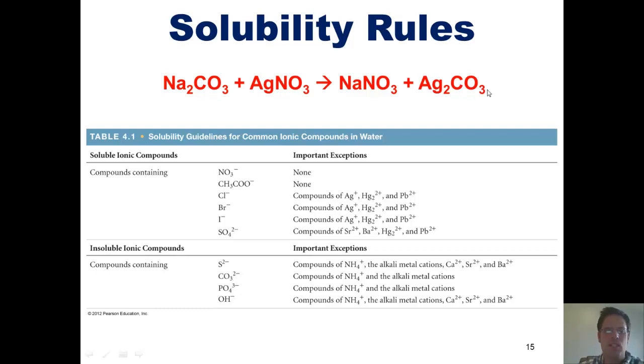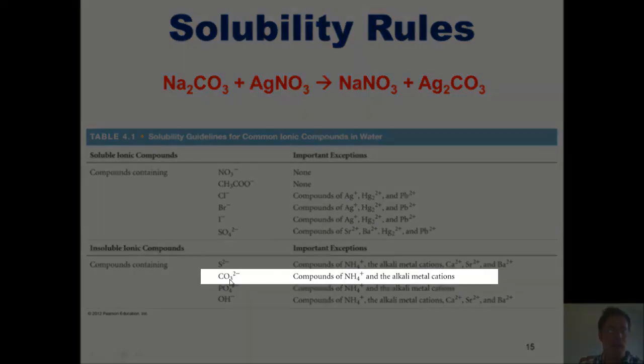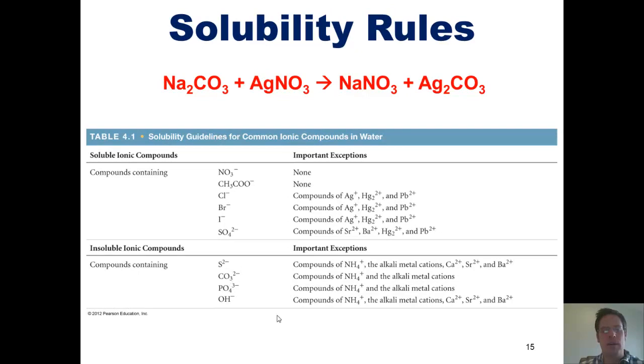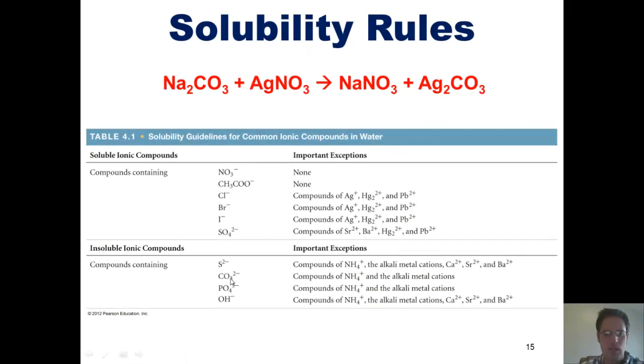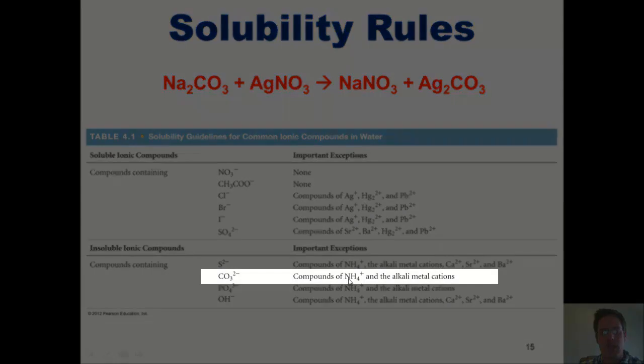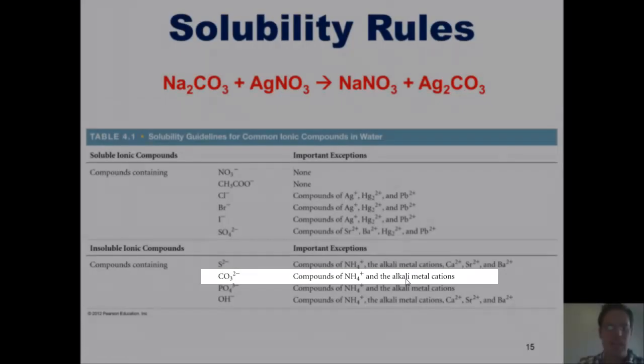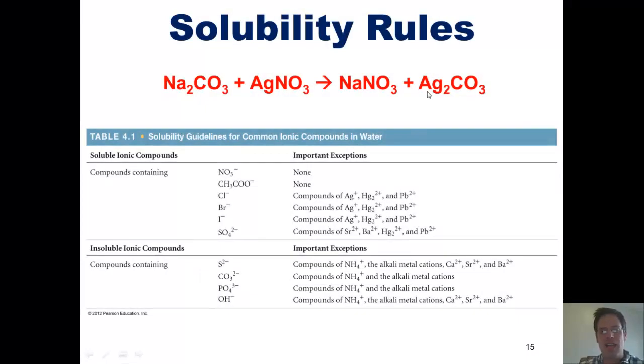Now, what about the silver carbonate? Do we see carbonate anywhere? We do. It's down here on the lower half of the table. Notice that it says that all ionic compounds containing carbonate are insoluble in water, except for ammonium carbonate and any carbonate that has a metal from group 1 of the periodic table. Is silver any of those? It is not.